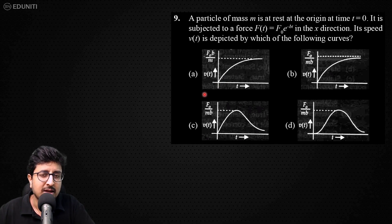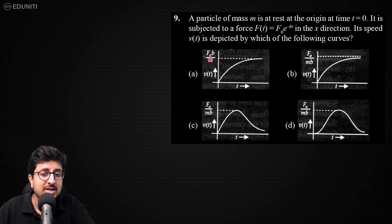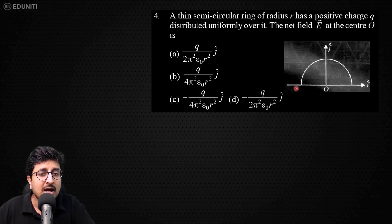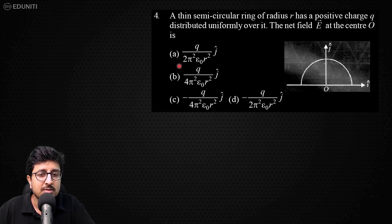इस सवाल में जो answer आने वाला है वो option B है। लेकिन यहाँ पे F0/M है — और दूसरे option में भी F0/M है। साथ ही यहाँ पे एक graph dotted line को touch नहीं कर रहा, वहाँ पे intersect कर गया है — ये सब छोटी-छोटी बातें हैं जो ध्यान देनी चाहिए। एक और example में answer option D आने वाला है, लेकिन एक minus sign है जो ध्यान देना ज़रूरी है — बच्चा जैसे ही magnitude आता है, गलती से option A tick कर देता है।